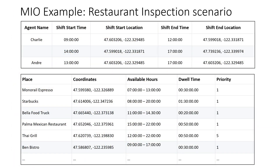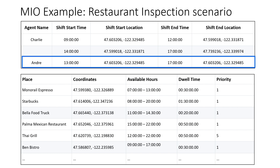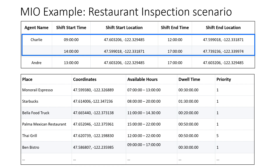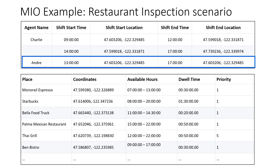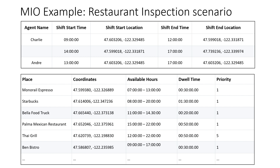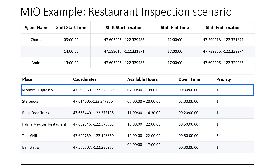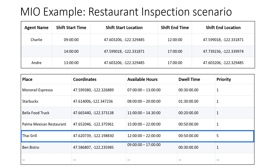Here is another sample scenario for the API. Two food inspectors, Charlie and Angie, need to visit 13 restaurants for inspection. The first table shows the shift information. Charlie has two shifts during the day, one before noon and one after his lunch break. His second shift ends at home around 5 PM. Angie is only available in the afternoon and wants to start and end his shift at the same location. The second table shows the available hours and priority of each restaurant and the dwell time the food inspector needs to spend at each restaurant. Note that Monorail Expresso is only open from 7 AM to 1 PM and Thai Grill has a higher priority than other restaurants.